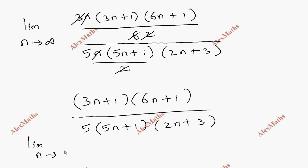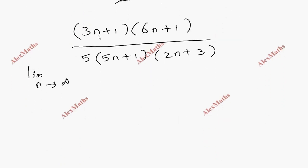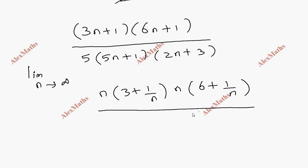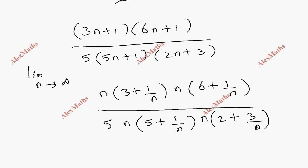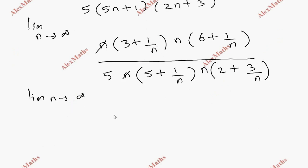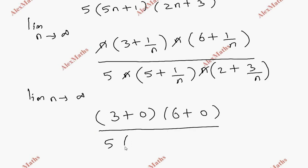As n tends to infinity, the highest power term is taken. We get: (3 + 1/n)(6 + 1/n) divided by 5(5 + 1/n)(2 + 3/n). The n terms cancel, and since anything divided by infinity is 0, we substitute to get (3 + 0)(6 + 0) divided by 5(5 + 0)(2 + 0).